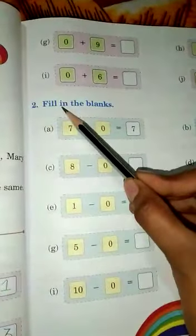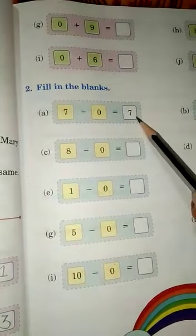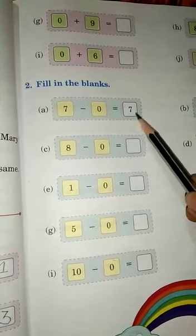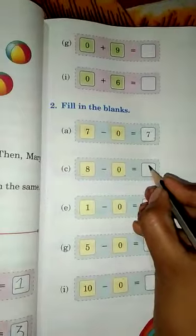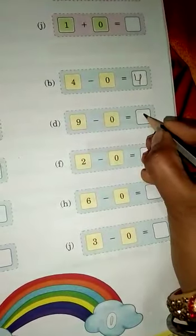Now, come to the exercise, Question number 2. Fill in the blanks. Question A: 7 minus 0 equals 7, because the number remains the same. See, 4 minus 0 equals 4. 8 minus 0 equals 8. 9 minus 0 equals 9. In this way, you have to do all questions.